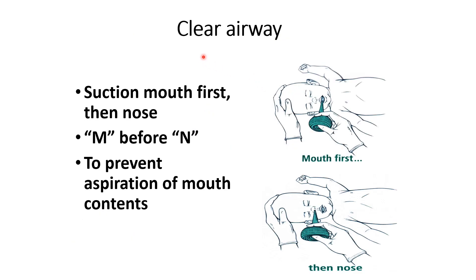To clear the airway, first clear the oral cavity, then the nose — remember M before N. If you clear the nose first, secretions present in the oral cavity will be aspirated by the baby. To prevent aspiration of oral content, always suction the oral cavity first.